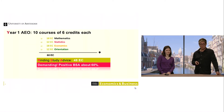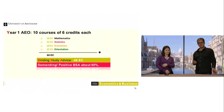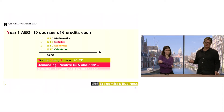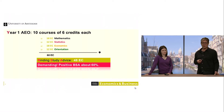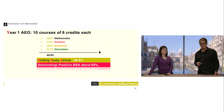In summary: there are 10 courses, each worth 6 credits — the European standard for course workload. A year has 60 credits. Of those, 18 go to mathematics courses and 12 to statistics, while the other half goes to economics (18) and orientation (12). The orientation courses are also technical, so it's a challenging program in the sense that you learn a lot of theory.